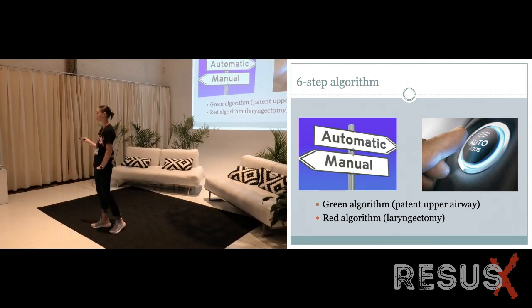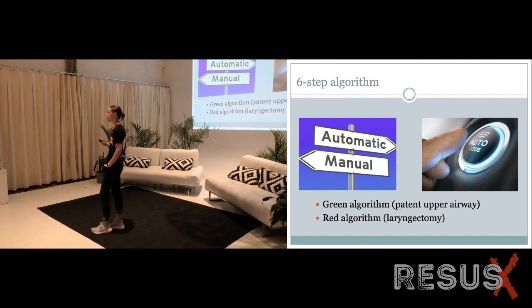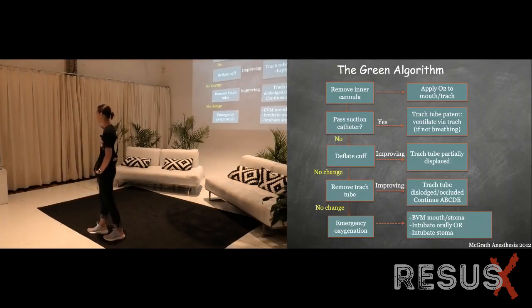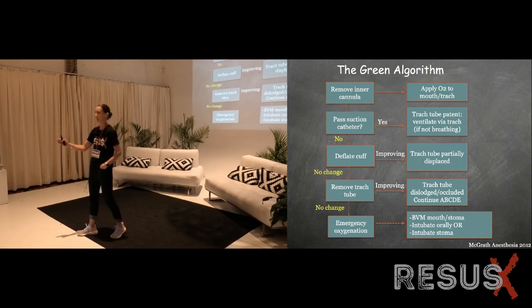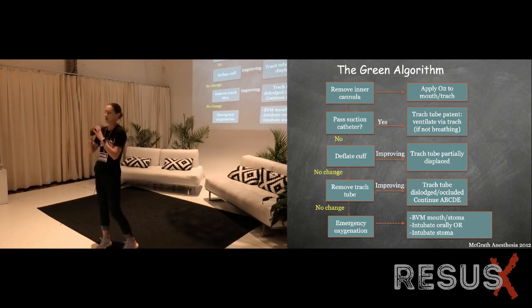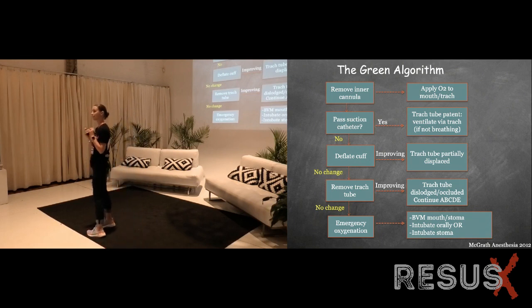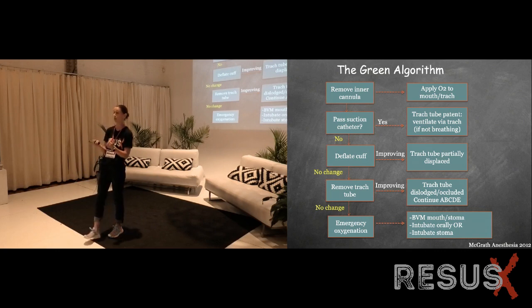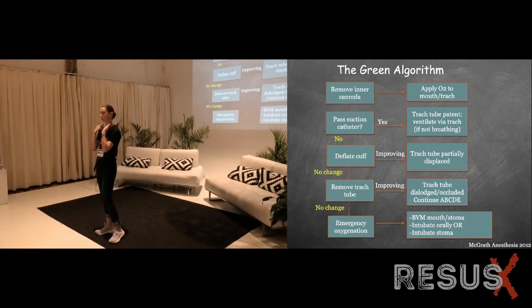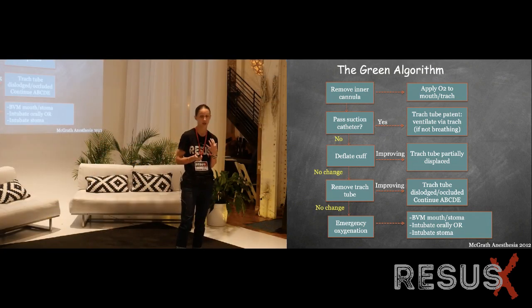So what is the algorithm? When I encountered that patient, I felt relatively lost — I essentially stumbled upon what was wrong without an organized approach. This algorithm is published in Anesthesia by McGrath. First, go through your ABCs: apply oxygen. If they have inadequate respiratory effort, use positive pressure. The default action for all trach patients in respiratory distress should be to bag both the face and the neck, because we don't know if there's an obstruction or where it is. High-flow oxygen to the face if they're breathing, or positive pressure if they're not.